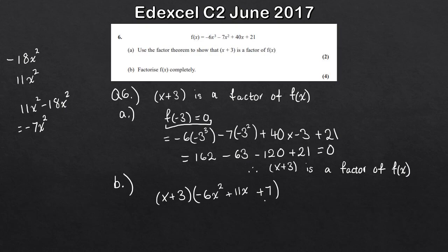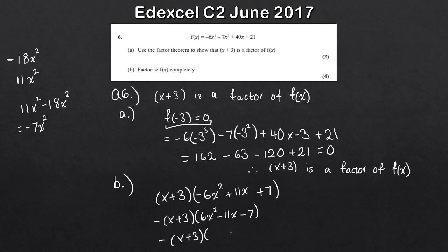So that middle term has to be 11x. But we're not finished - we need to factorise this completely. To make it a little bit easier, I'm going to bring the minus out to the front, so everything will just be opposite signs. This gives minus, times x plus 3, times 6x squared minus 11x minus 7. Now if we just factorise this quadratic, I'll get 3x minus 7 and 2x plus 1. You can use your calculator here - that will just give you the solutions. And that's f of x factorised completely.